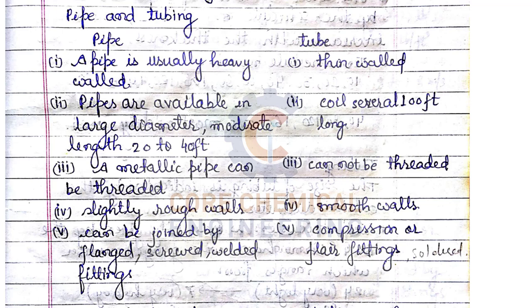In any industry, most processed fluids, utilities, or steam travel through pipes. Tubes, by contrast, have a very small diameter and are used for instrument air supply in the control room or for steam tracing around pipelines for heat conservation. A pipe is usually heavy-walled and available in large diameters with a moderate length of 20 to 40 feet.